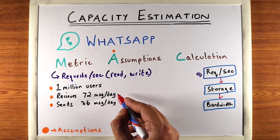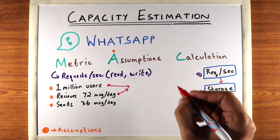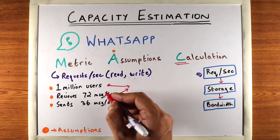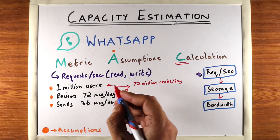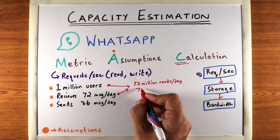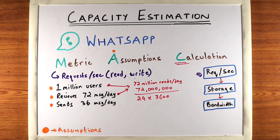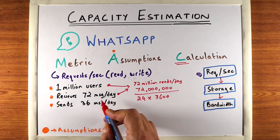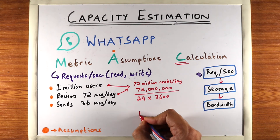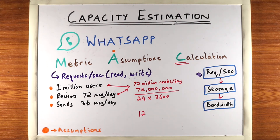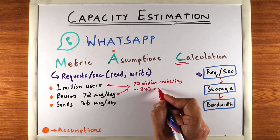A receive is a read from the database perspective. So we calculate reads as: 72 messages per day times 1 million users equals 72 million read requests per day. We typically want requests per second, so we divide 72 million by 24 hours and 3,600 seconds per hour. You'll notice why picking 72 was useful — you can divide 72 by 24 cleanly. In general, multiples of 12 are useful because they make calculations easier. This comes out to approximately 833 read requests per second.